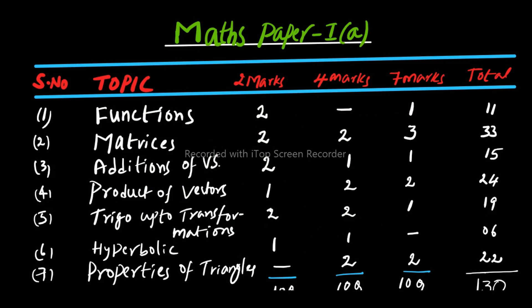Let's look at the weightage of Maths Paper 1A in tabular form: serial number, topic name, 2 marks, 4 marks, 7 marks, and total. From this table you can understand the various topics and the weightage of 2 marks, 4 marks, and 7 marks in each topic. For example, the first topic is Functions — 2 two-mark questions and 1 seven-mark question will come, totalling 11 marks. There are no 4 mark questions from Functions.